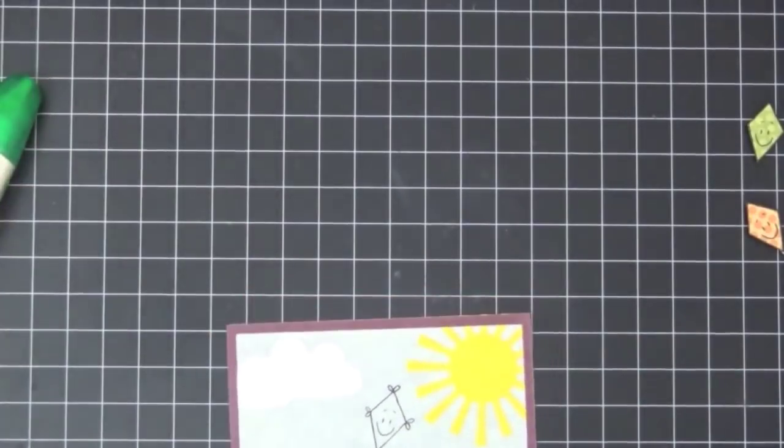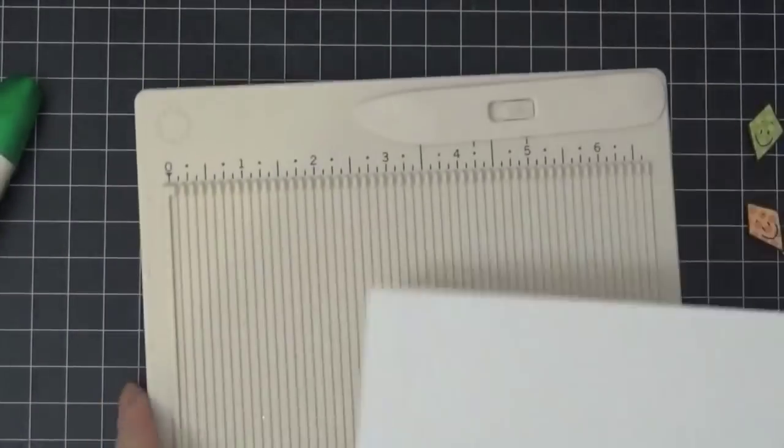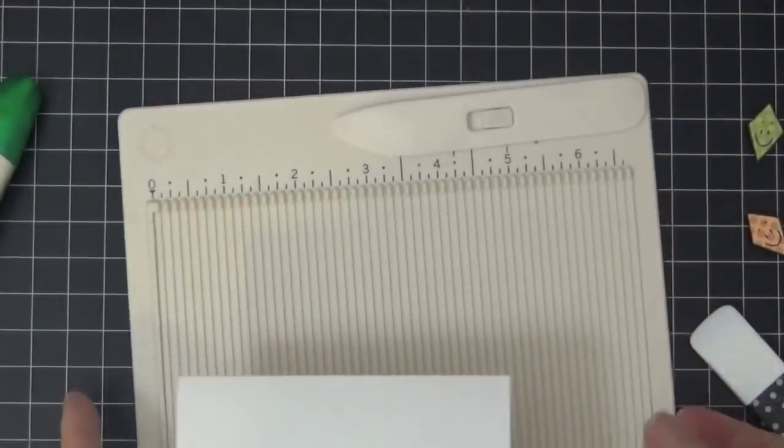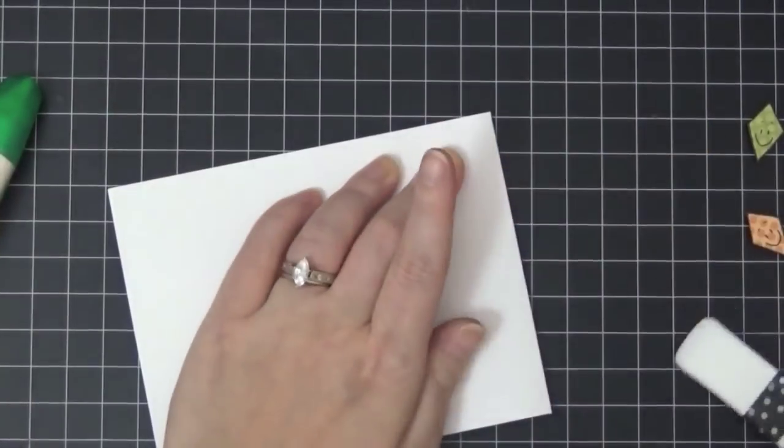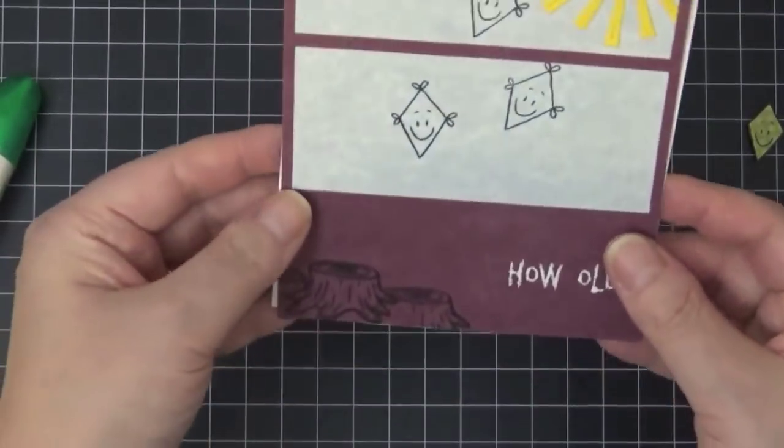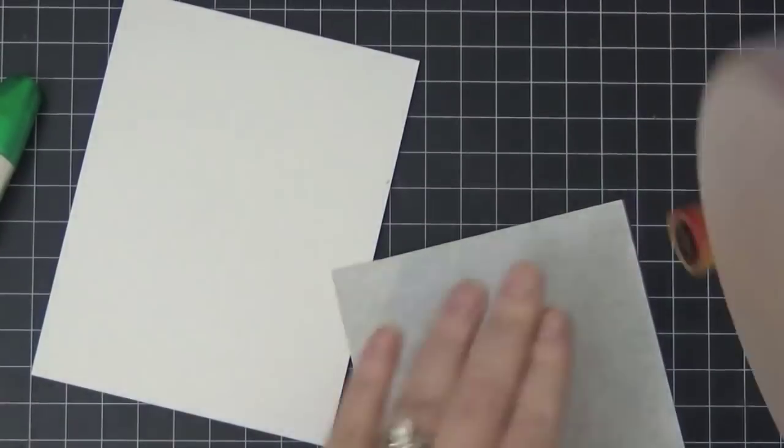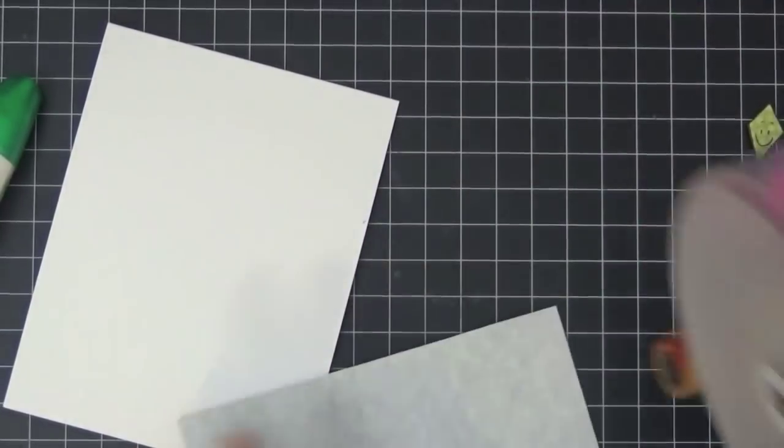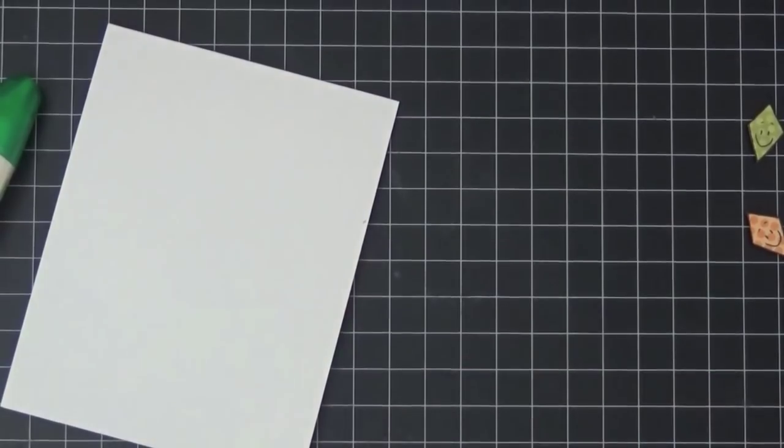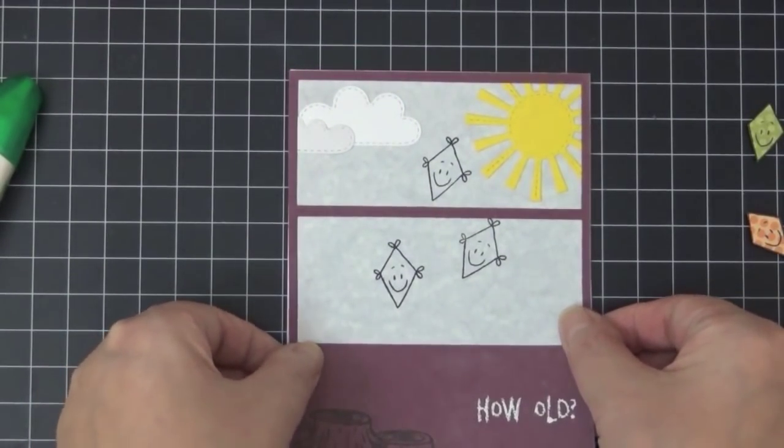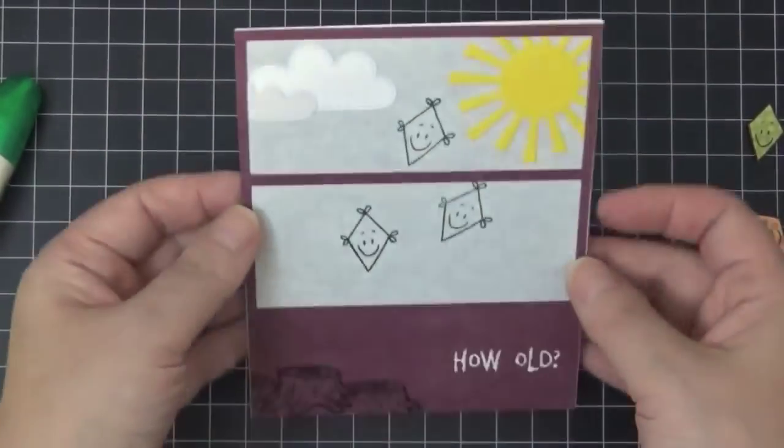And now I'm going to go ahead and prep my card base, which is a 110 pound Neenah Solar White. Top folding card, scored it at 5.5. And I'll be putting this panel right on my card base, and it's going to fit perfectly on top of the card base. I'm going to go ahead and try to line it up as best as I can, and it will cover the entire panel.